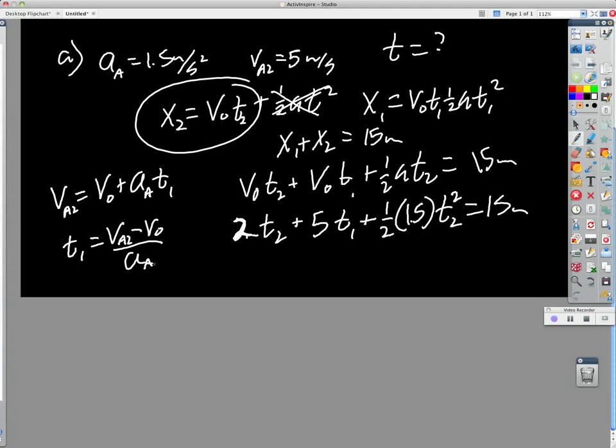So basically, what we're saying is, I would say you can use this to find t1, and then I guess if you wanted, you could go back and say x1 is v0 t plus 1 half a t squared. Plug this in here, because that's t1, and then that would give you x1.